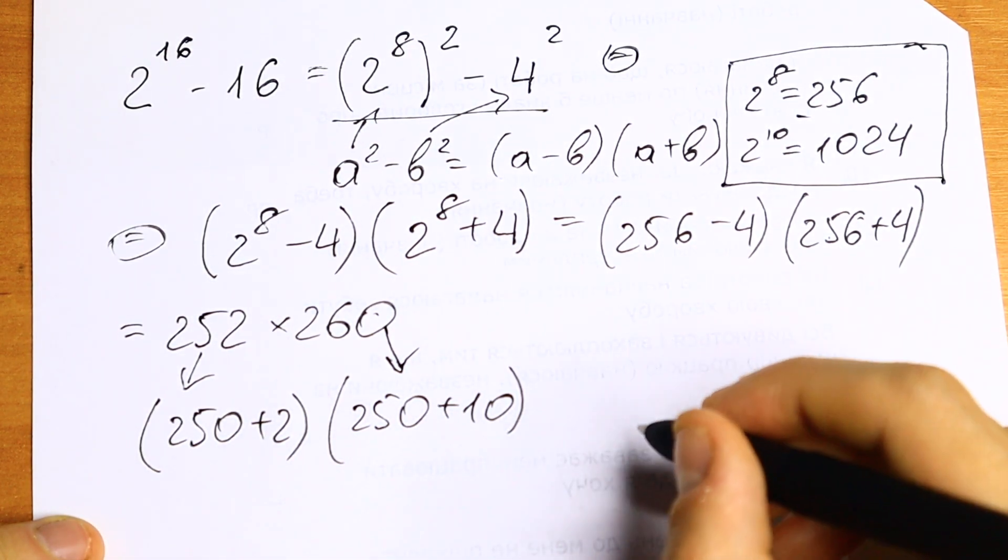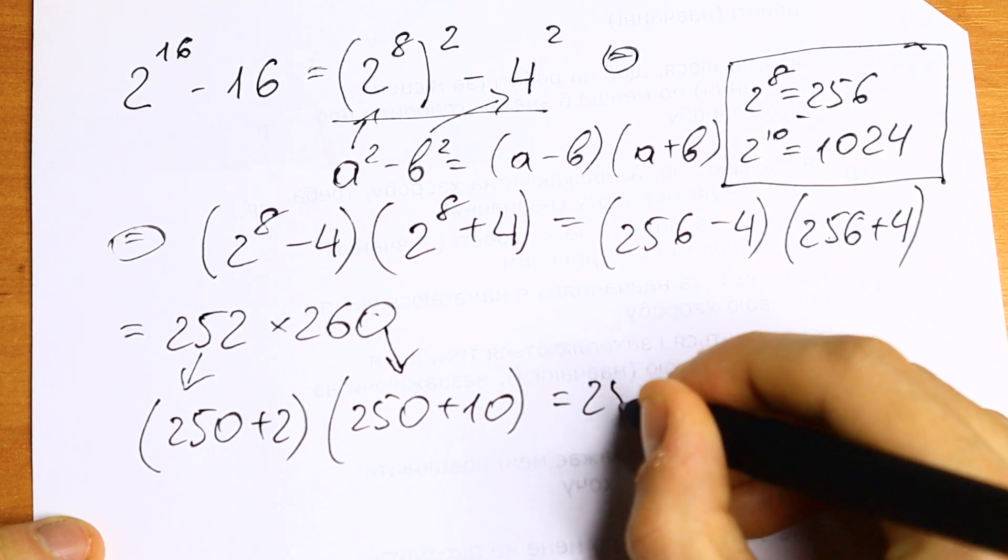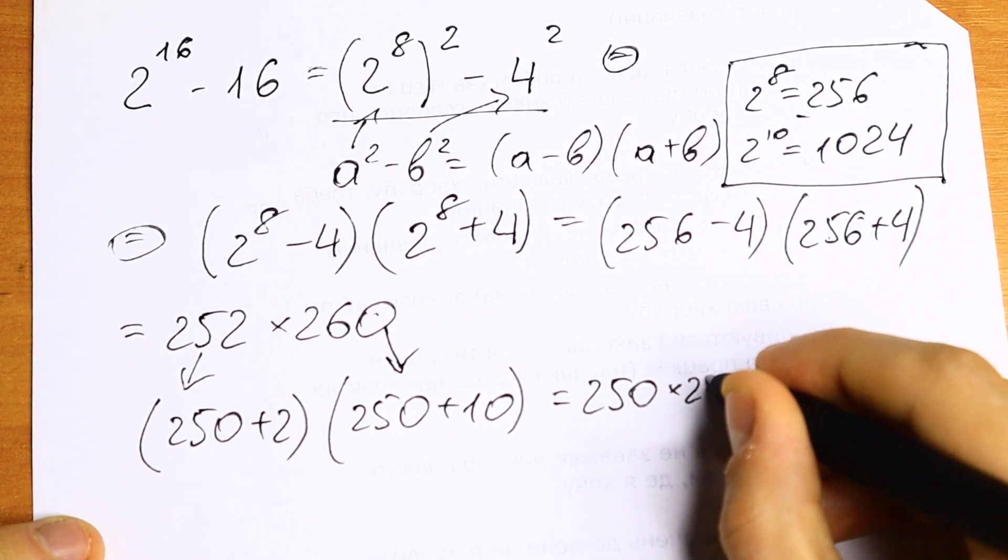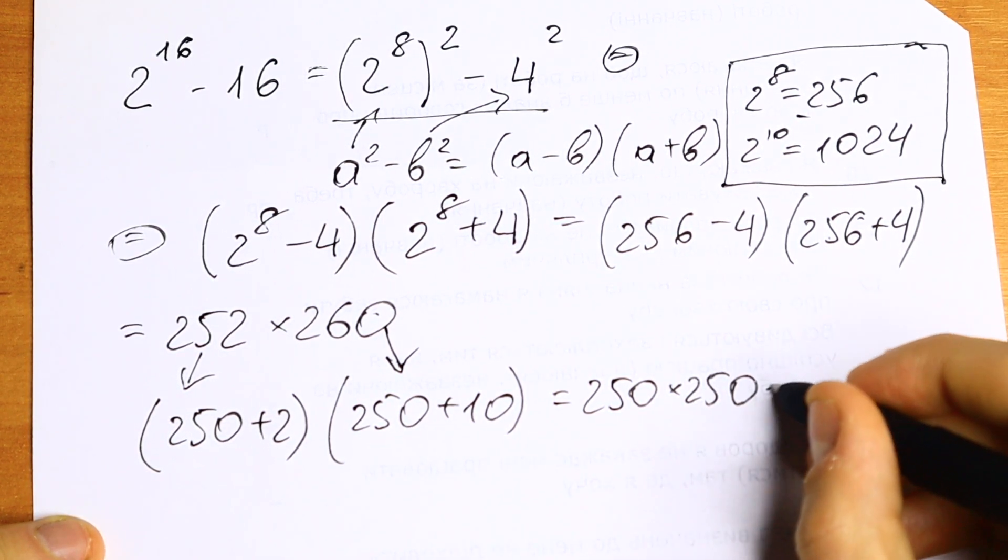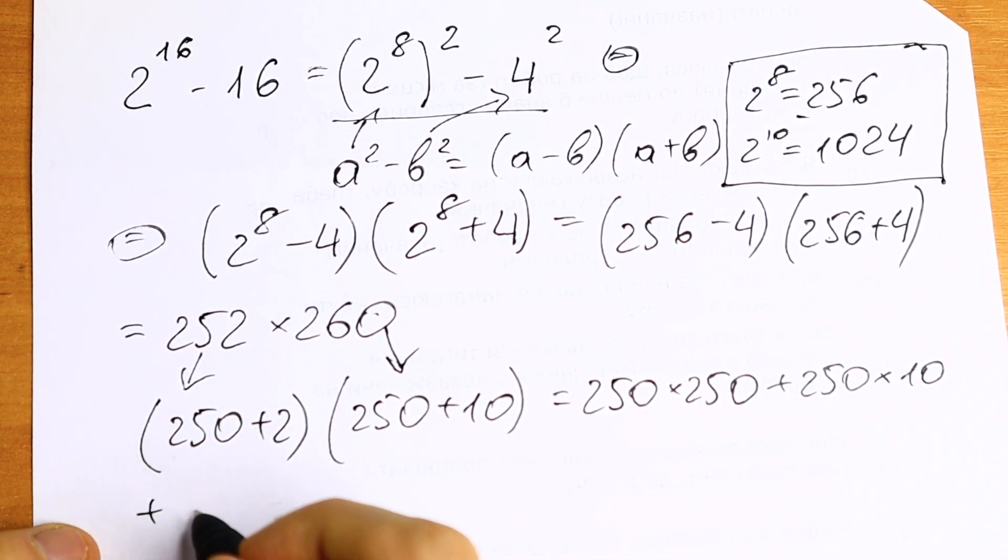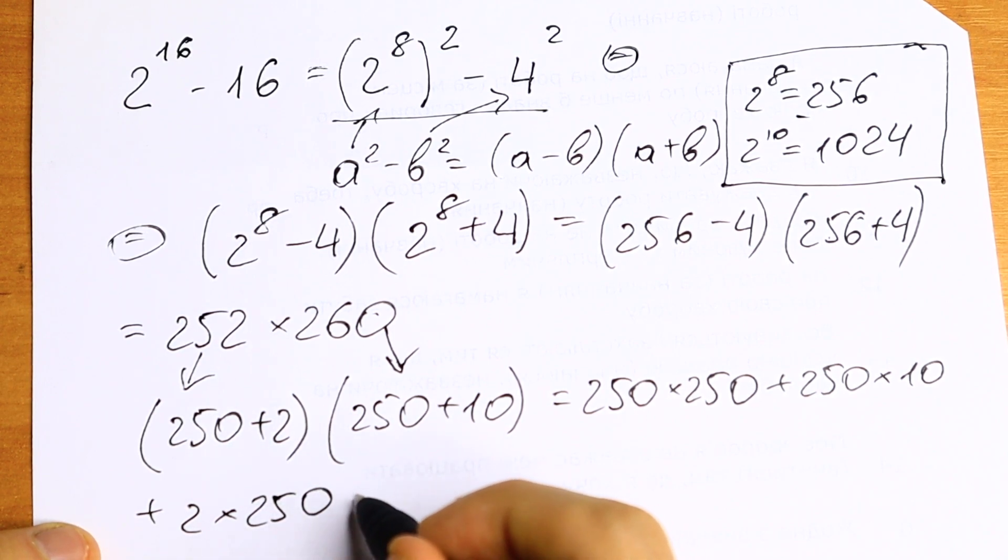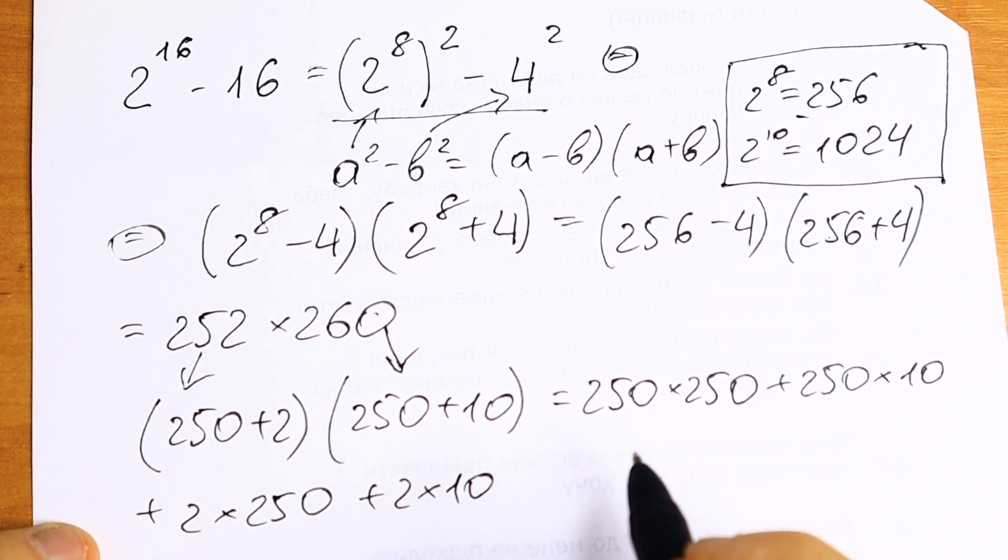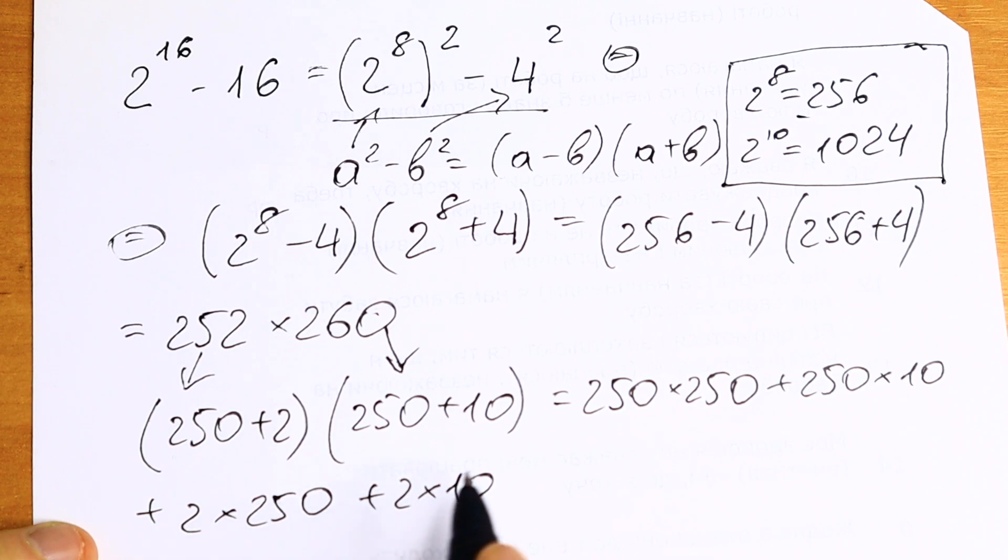Let's multiply parenthesis by parenthesis. We will have 250 times 250 plus 250 times 10 plus 2 times 250 and plus 2 times 10. We just multiply our parenthesis.